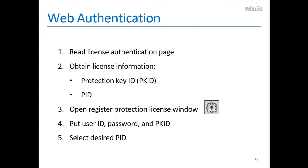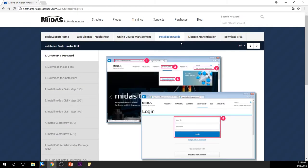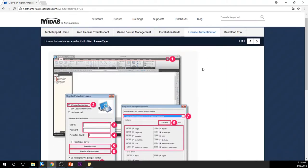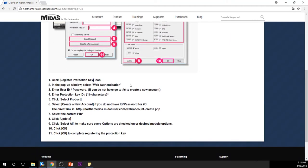Once you complete the installation process, it's time to get access to your web license of MIDAS Civil. There are 5 steps and the steps for web authentication are much simpler than the installation process, so please don't worry — let's work on it together. First, please read the license authentication page. The page is located right next to the installation tab. Once you click 'Web License Type' under the license authentication tab, you'll see the steps are much simpler. Please read them.